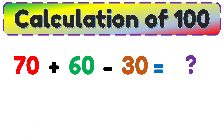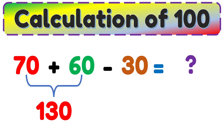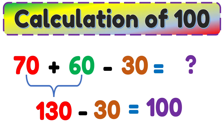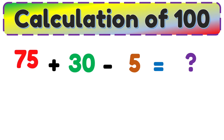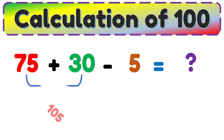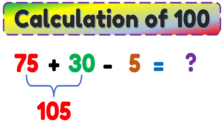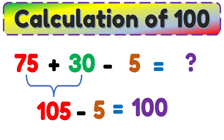70 plus 60 minus 30. 70 plus 60 is equal to 130, 130 minus 30 is equal to 100. 75 plus 30 is equal to 105, 105 minus 5 is equal to 100.